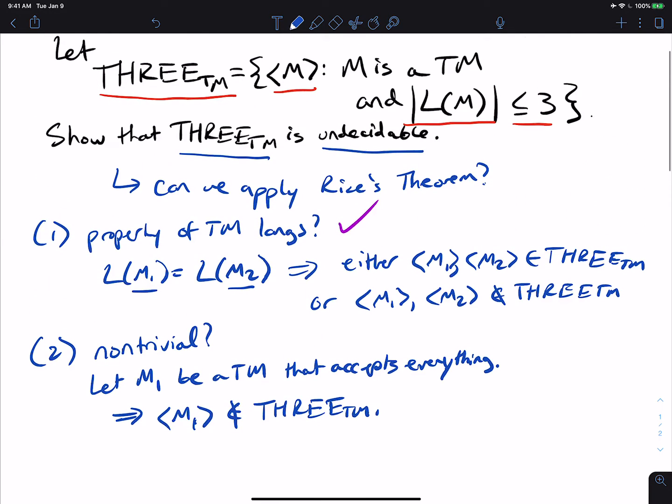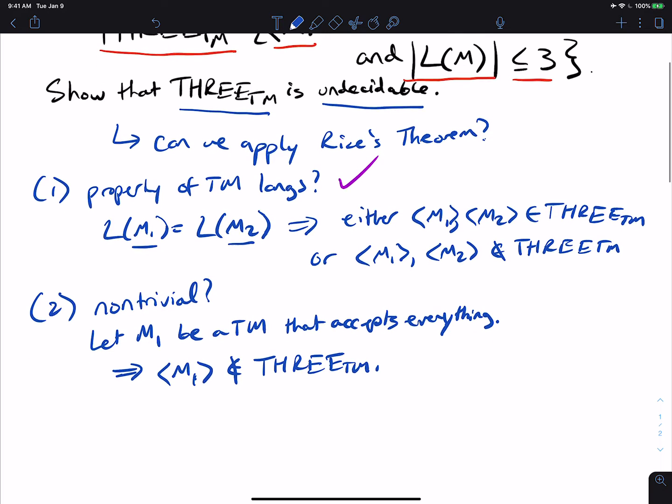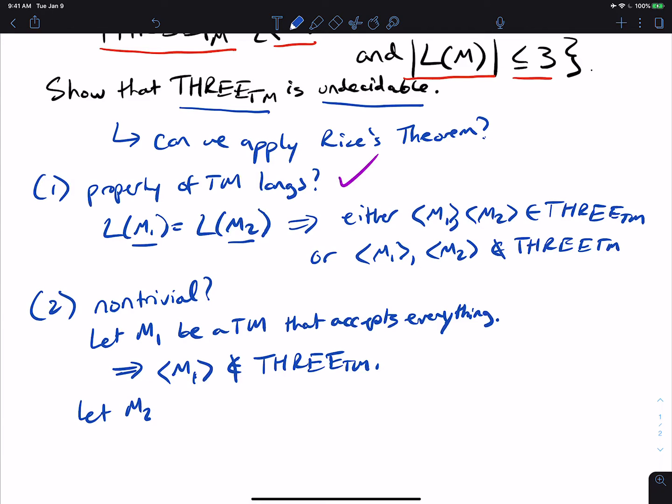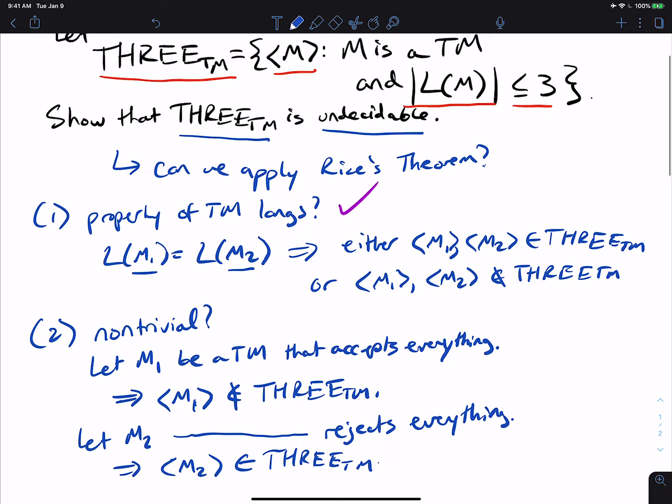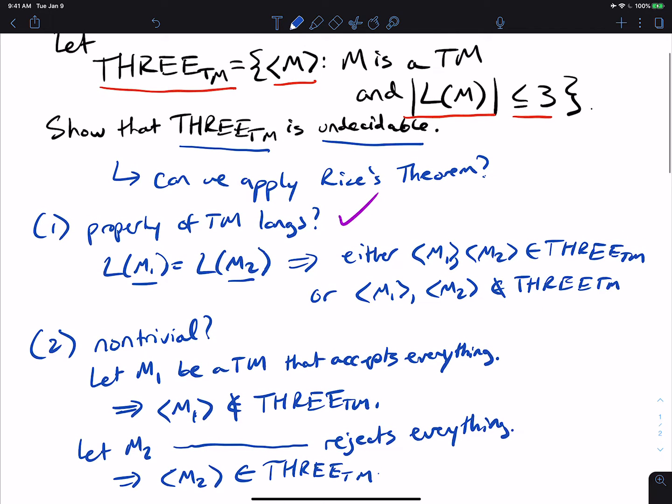Well, can we find an example of a machine that is in 3TM? So it accepts at most three strings. Well, what we can do here is let m2 be a Turing machine that rejects everything, just says, no, I don't accept it. Well, that implies that m2 is in 3TM because it accepts zero strings, which, as far as I can tell, is at most three.